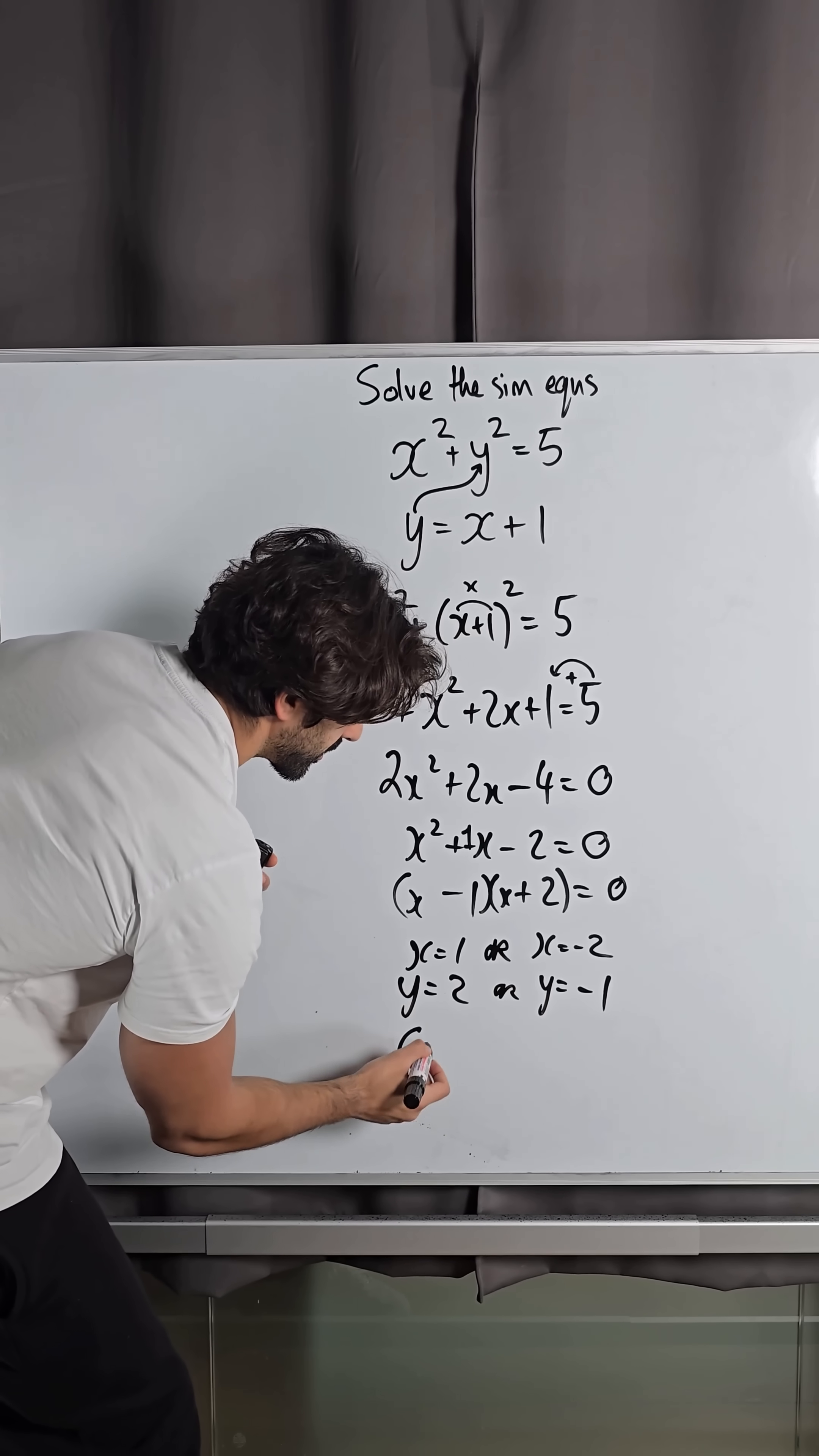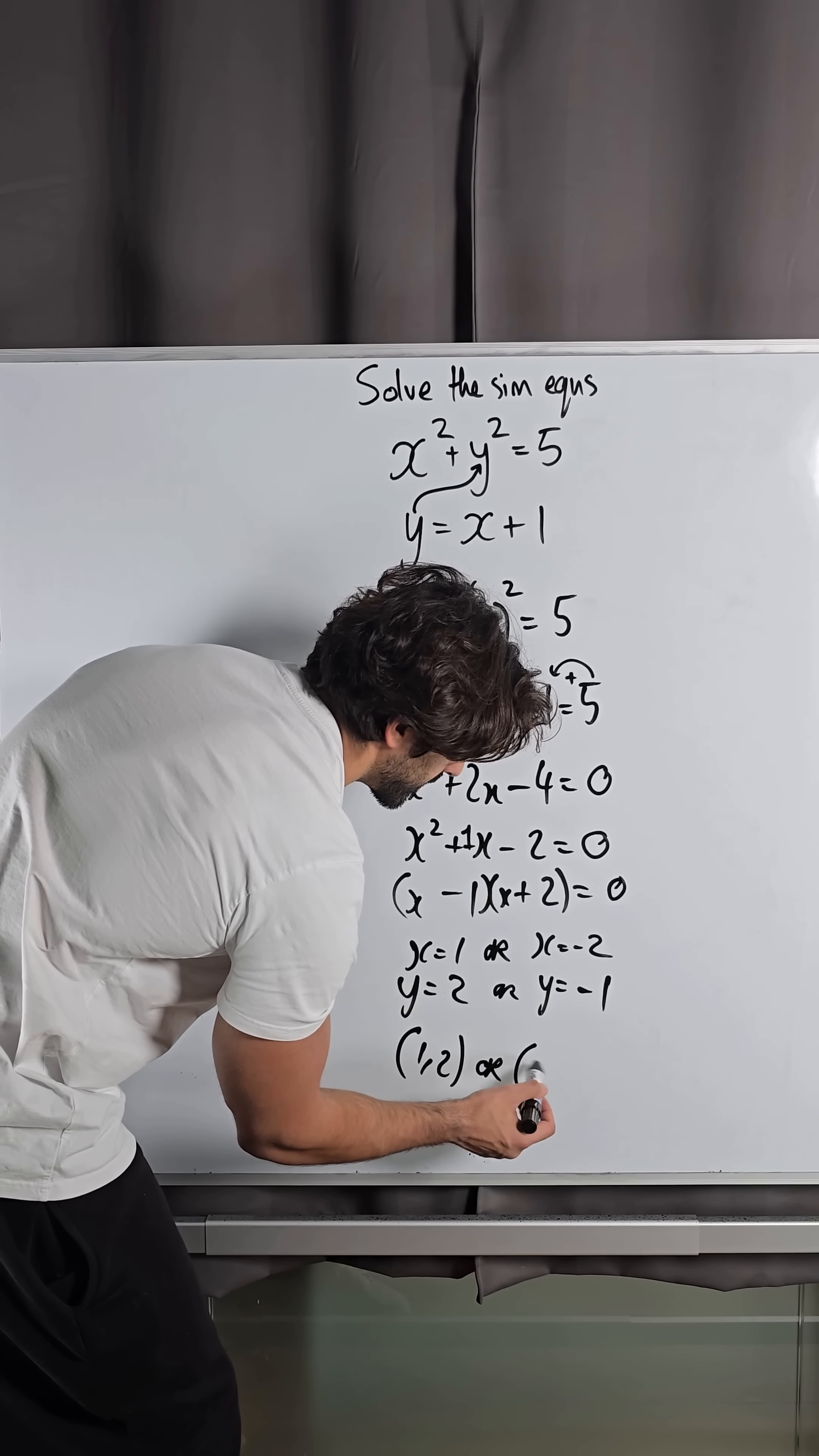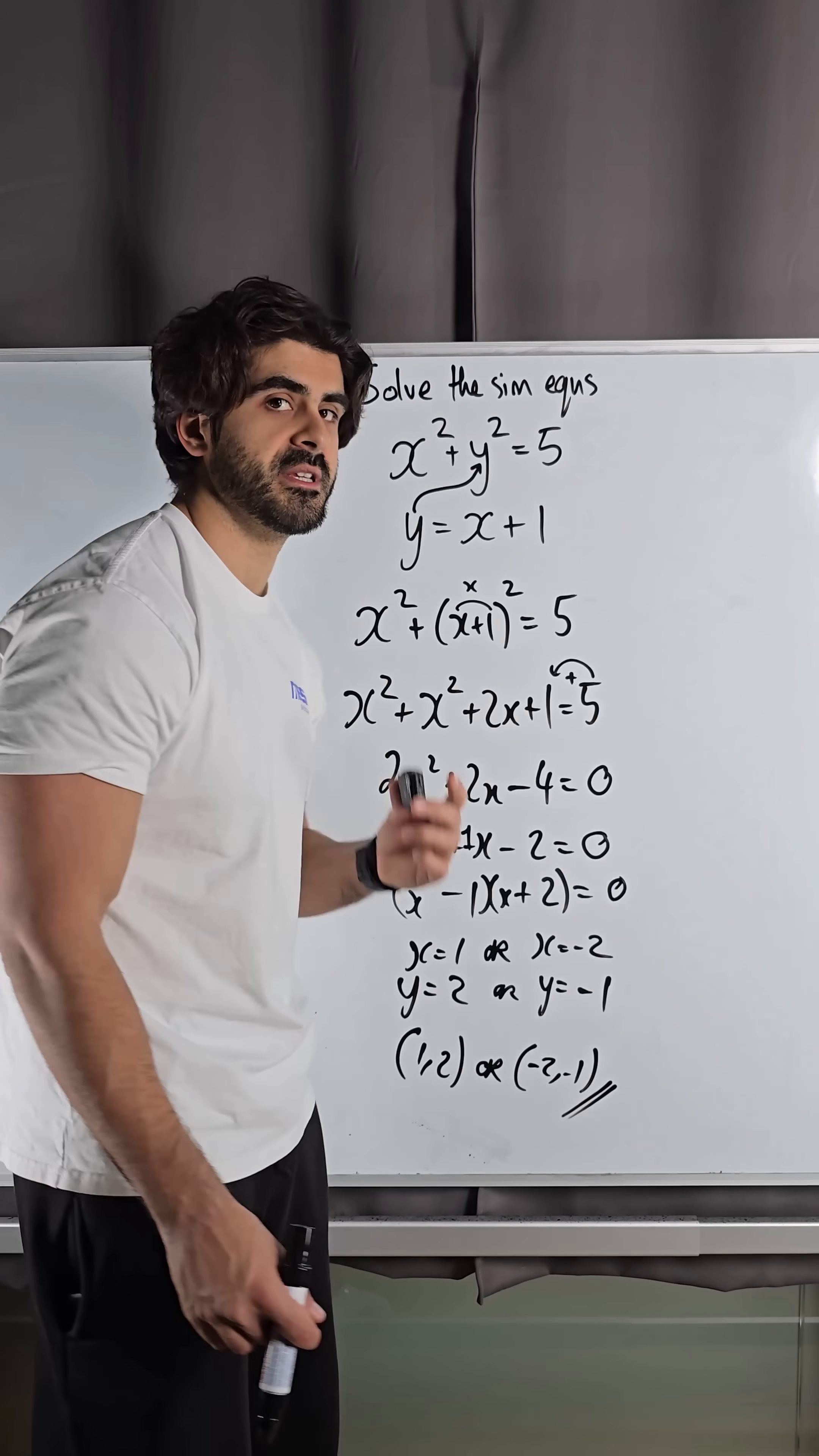So my two coordinates are 1, 2, or in this case minus 2, minus 1. So those are our two solutions where they meet.